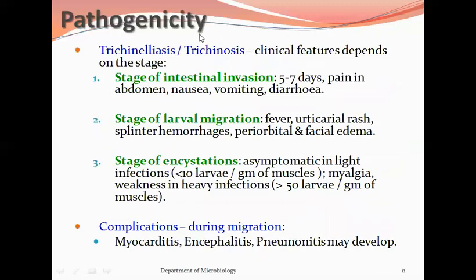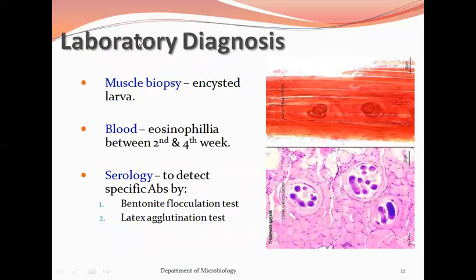The disease caused is called trichinellosis or trichinosis, and clinical features depend on the stage. In the stage of intestinal invasion, abdominal pain, nausea, vomiting, and diarrhea may occur. In the stage of larval migration, fever, urticarial rash, splinter hemorrhages, and periorbital and facial edema can occur. In the stage of encystment, light infections are asymptomatic, while heavy infections cause myalgia.